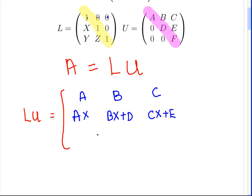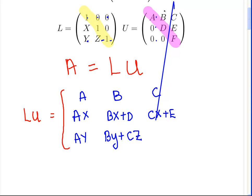The bottom row has quite a bit to it. We have Y and Z in the third row of L. The first element gives AY. The next element gives BY plus CZ. And the last element gives CY plus EZ plus F.